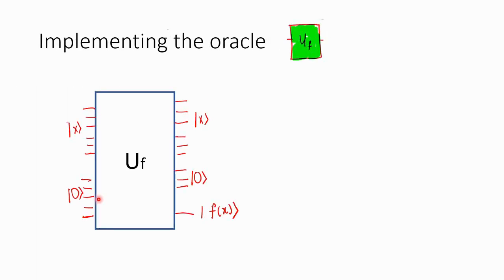Now let us look at how to implement each of these components. This is how implementing the oracle looks like. Oracle U_f will have a number of bits which take the input x, a bit which gives the answer f(x) — either 0 or 1 based on what input comes in. There will be some extra 0 bits which help to create the circuit U_f.